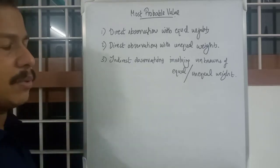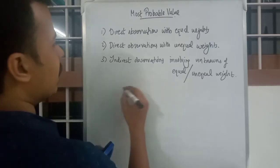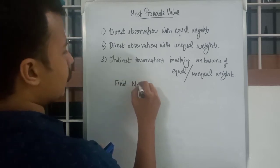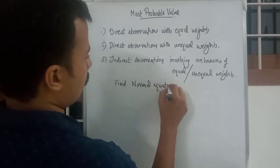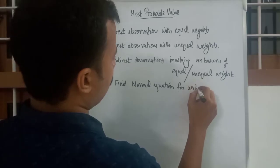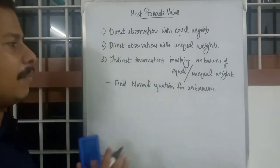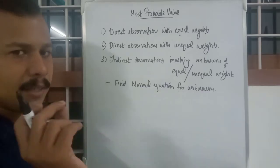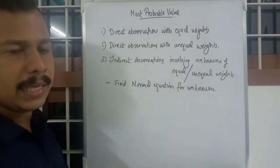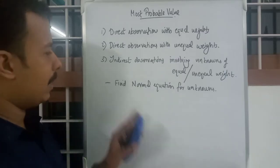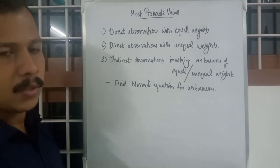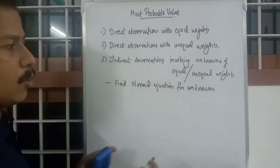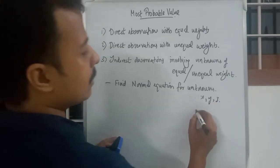The procedure for this is very simple and 90% of it you already know. The first method to find MPV is to find normal equations for the unknowns — that is the main point. As you know, our last video was about calculation of normal equations from a set of equations. If you've already watched that, you know what I mean. If not, please watch that video first.